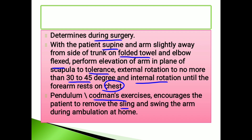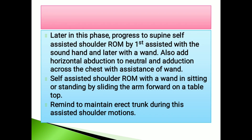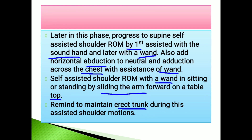Encourage the patient to remove the sling and swing the arm during ambulation at home. Later in this phase, progress to self-assisted shoulder range of motion — first assisted with the sound hand. Also add horizontal abduction to neutral and adduction across the chest with assistance, and self-assisted shoulder range of motion with a wand in sitting or standing by sliding the arm forward on a tabletop. Maintain erect trunk during assisted shoulder motions.